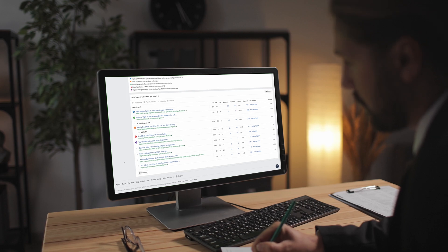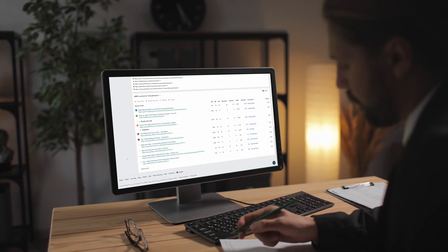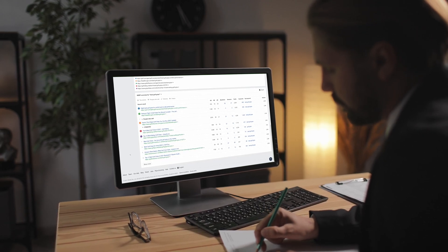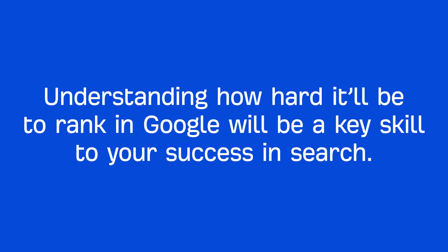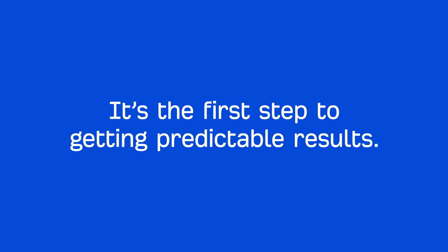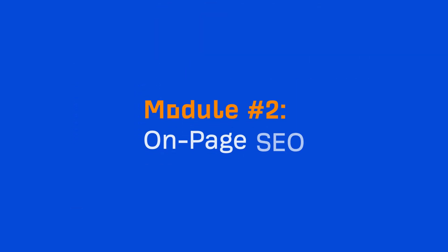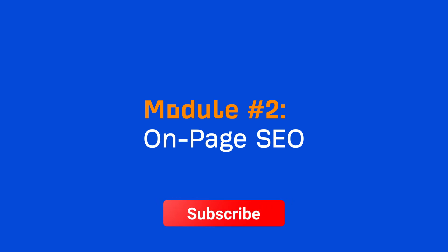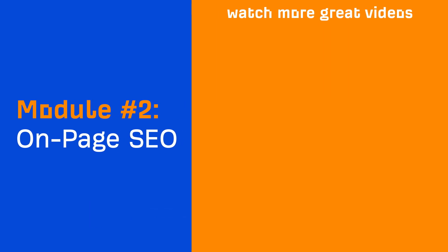Understanding how hard it'll be to rank in Google will be a key skill to your success in search, because it's the first step to getting predictable results. If you know what it'll take to rank ahead of your competition, then it all comes down to execution — and that's what the next two modules are all about. Next week, I'll be dropping our on-page SEO module, which will help with actually creating content that ranks. Make sure to subscribe so you don't miss out on those lessons, or if you're watching at a later time, check the description to continue on with the course.